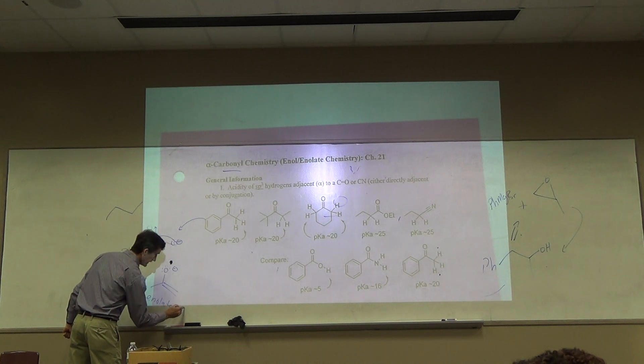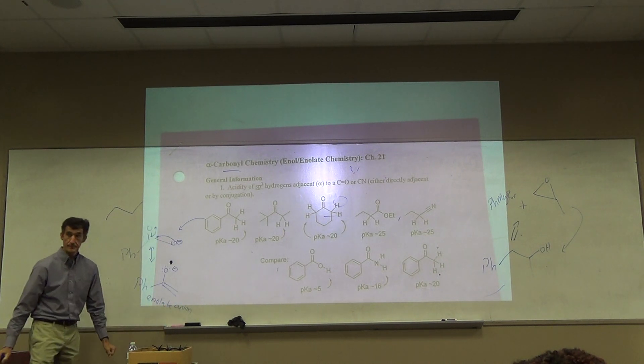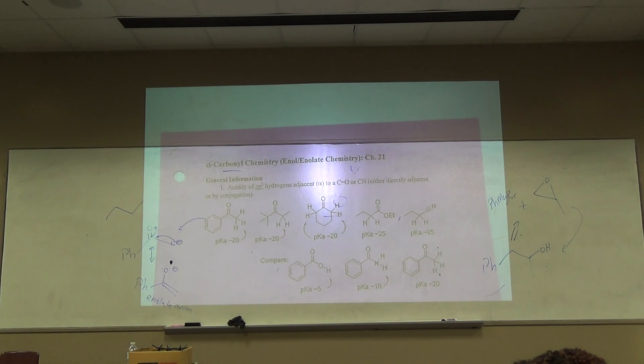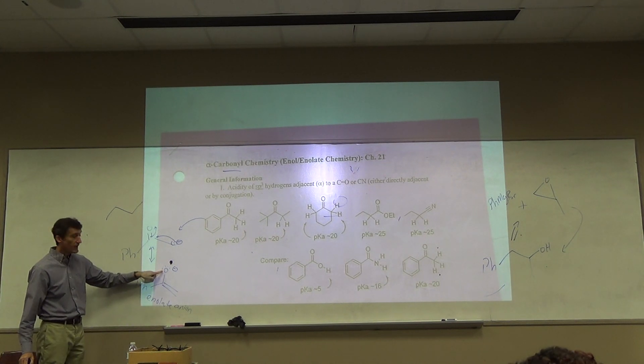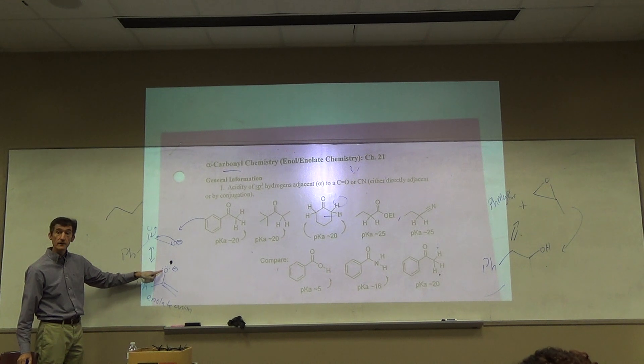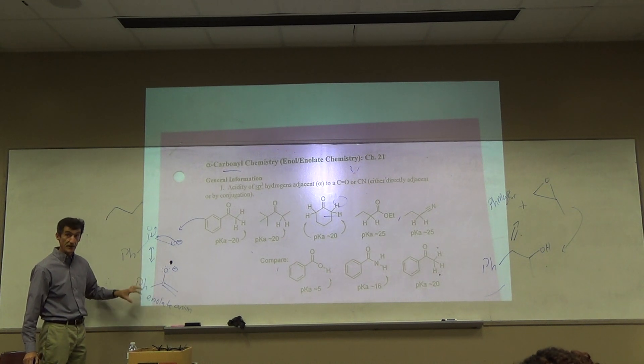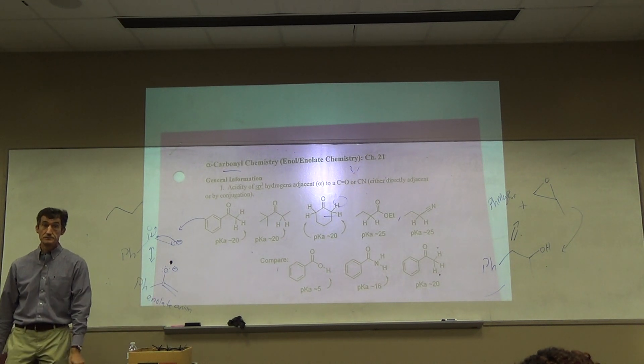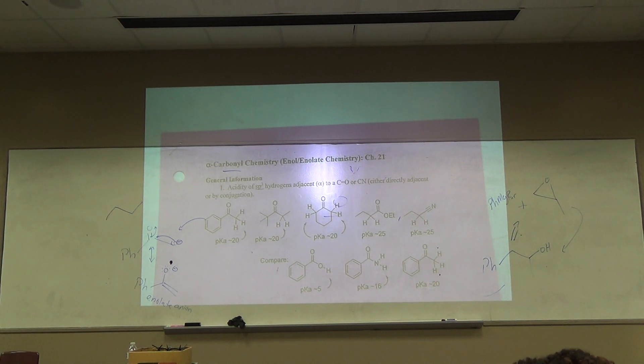Enolate anion. All enolate anions. All enolates are anions. If there was an H here on this oxygen and it was all neutral, what would that be called? An enol. The enolate is the anion of an enol.